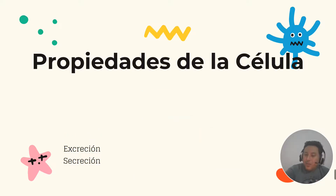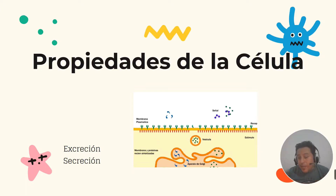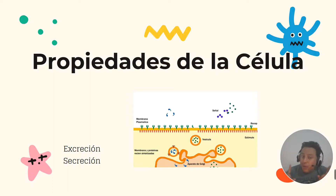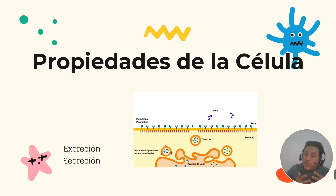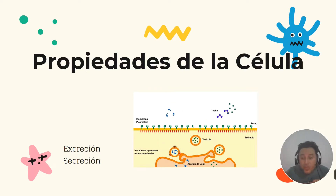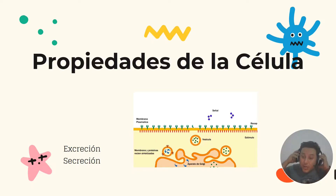Excreción y secreción son dos propiedades muy similares con ligeras diferencias. La excreción es cuando salen de las células sustancias de desecho, como por ejemplo el CO2. En cambio, en la secreción salen sustancias del interior de la célula que van a cumplir una función en el cuerpo, como por ejemplo una hormona de crecimiento que hace que las células se reproduzcan, crezcan y desarrollen nuevos tejidos.